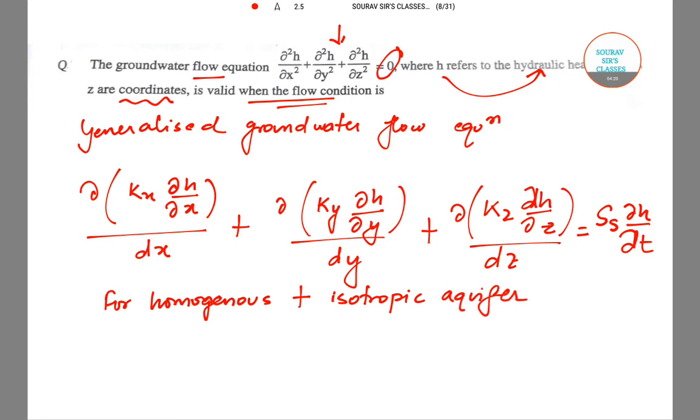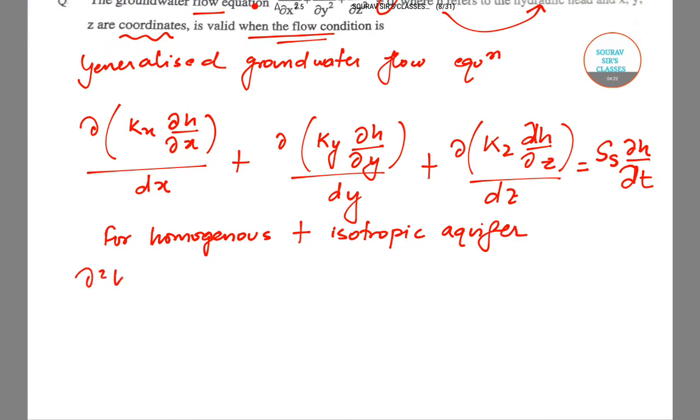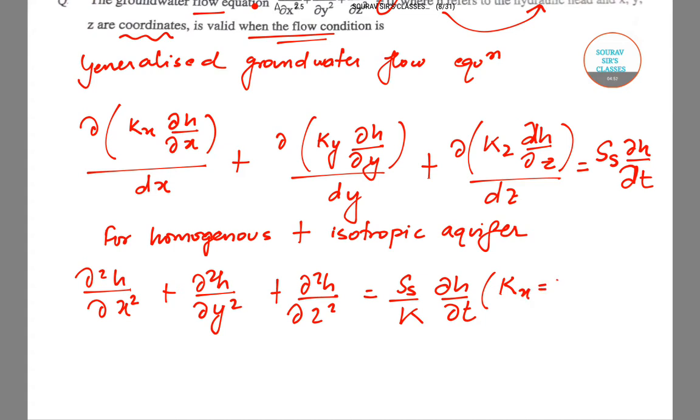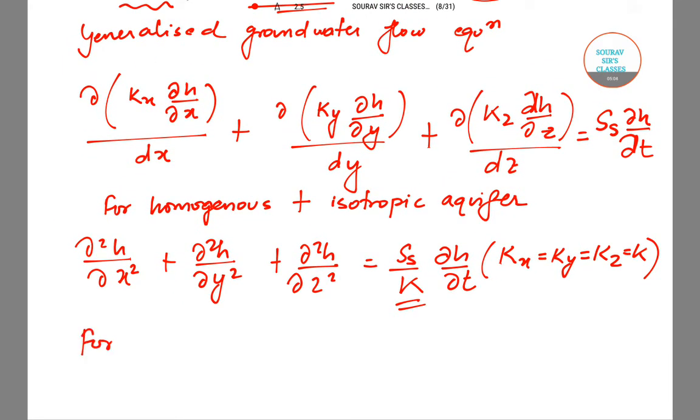Now for homogeneous and isotropic aquifer, we require the second-order derivative: del²h/del x² plus del²h/del y² plus del²h/del z² equals (Ss/k) * del h/del t. And within brackets we have kx = ky = kz = k, so that's why k comes here.